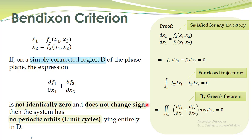That is basically the statement of this theorem. If this expression is not identically zero and does not change sign, then this integral cannot equal zero, which means no closed orbit can exist in that particular system. A closed orbit means a limit cycle.